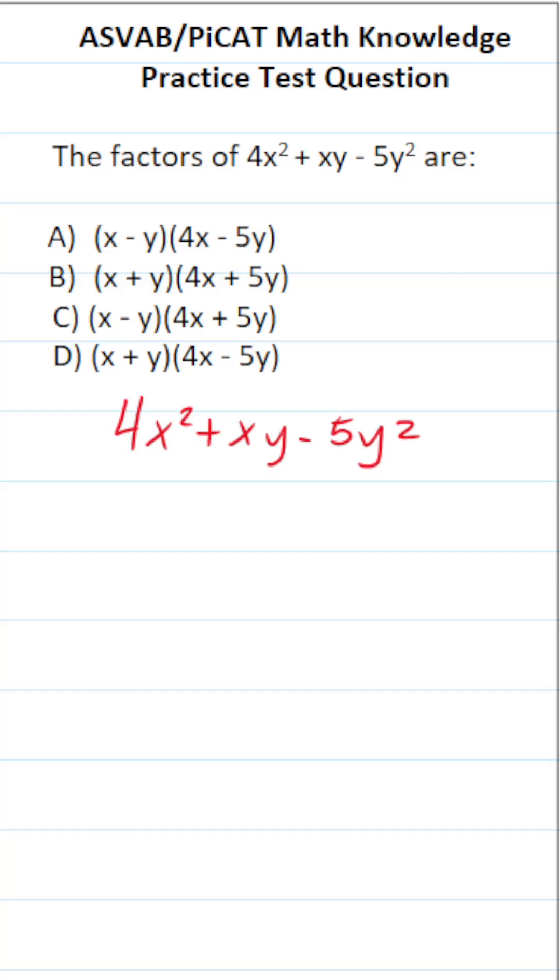And in order to factor this one, we're going to use what's called the AC method. This is a quadratic expression. So we know 4 is a. This one that's not expressed in front of xy is going to be b. And this negative 5 is c.